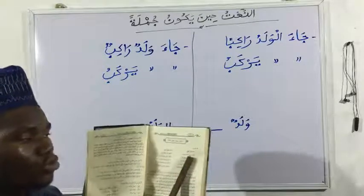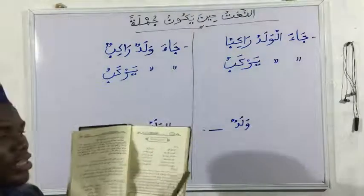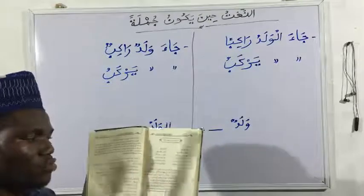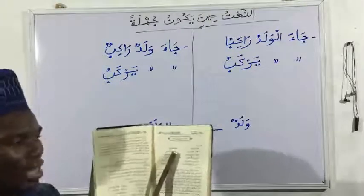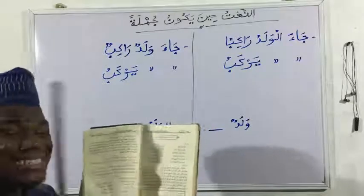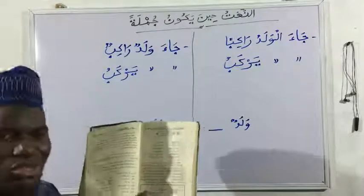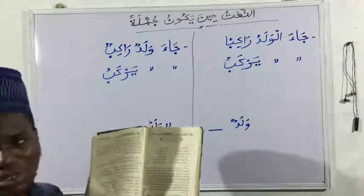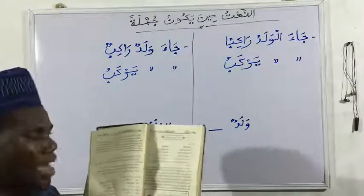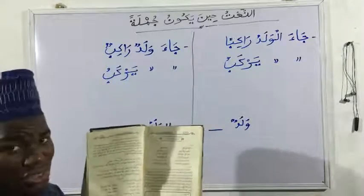Number two: ra'aytu rajulan yasbaħu — I saw a man swimming. We can say: I saw a swimming man. The rajulun is the manu't — what is being qualified — and it is in nakira state. So the jumla coming after it is sifa because it is qualifying what is in nakira state.